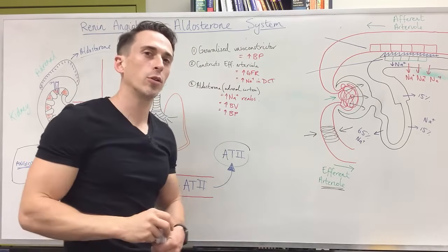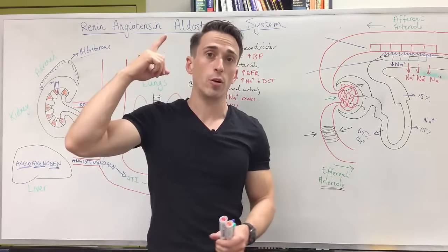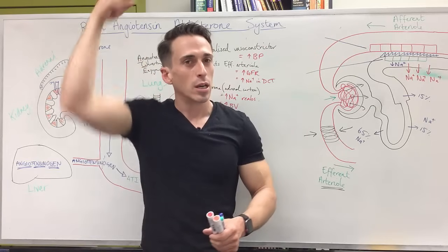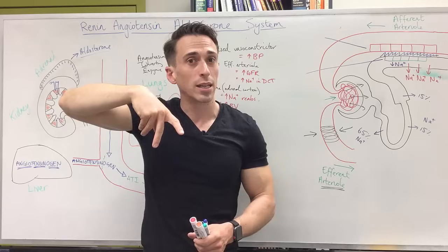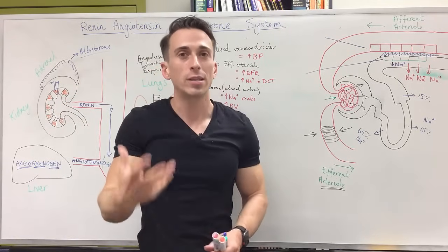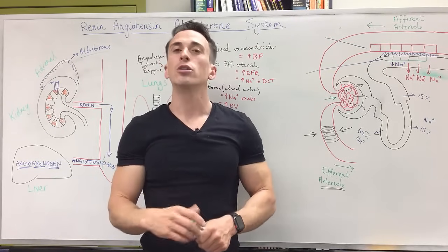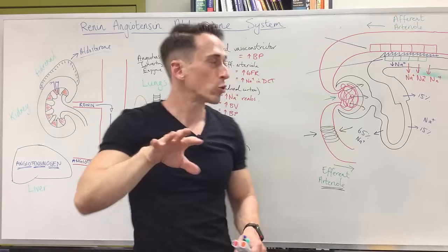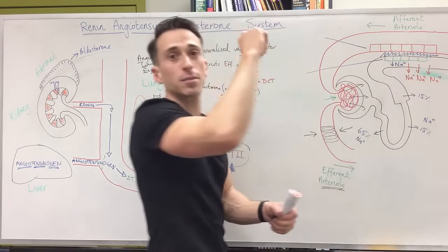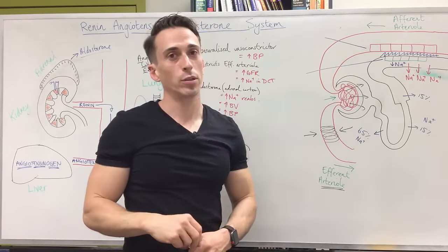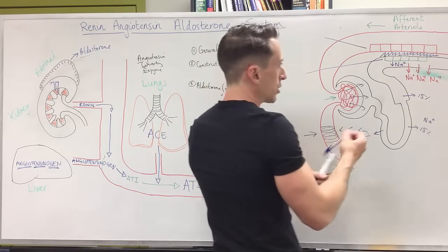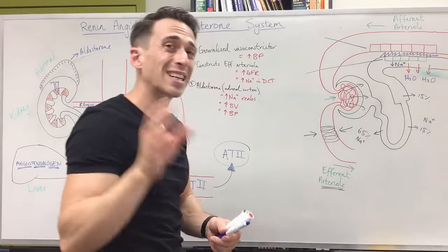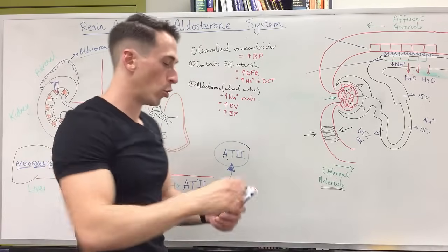The last thing angiotensin-2 does is travel to the hypothalamus — the master regulator of the endocrine system. The hypothalamus connects to the anterior and posterior pituitary glands. The posterior pituitary gland stores ADH — anti-diuretic hormone. Diuresis means to urinate; anti-diuretic means to stop urinating. Angiotensin-2 stimulates the release of ADH, which travels to the distal convoluted tubule and the collecting ducts and tells them to reabsorb more water into the body, increasing blood volume and blood pressure.